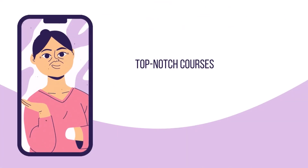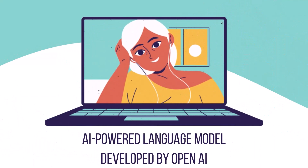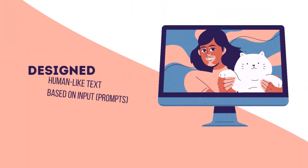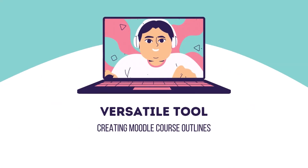First let's get acquainted with ChatGPT. ChatGPT is an AI powered language model developed by OpenAI. It's designed to generate human-like text based on the input it receives. It's a versatile tool that can assist in various writing tasks including creating course outlines.